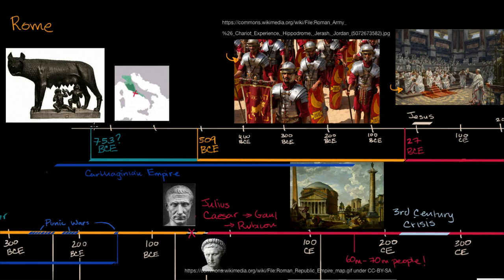And this date — 753 — is the date that's often given to the founding of Rome by Romulus, one of twin brothers, Romulus and Remus, raised by a she-wolf. They were abandoned and raised by the she-wolf as legend would have it, and then Romulus eventually kills his brother and becomes the first king of Rome.